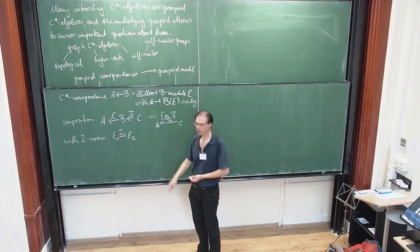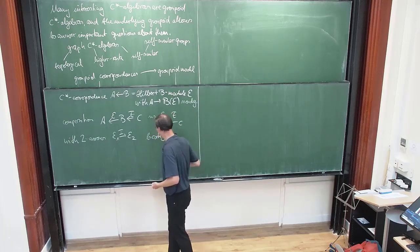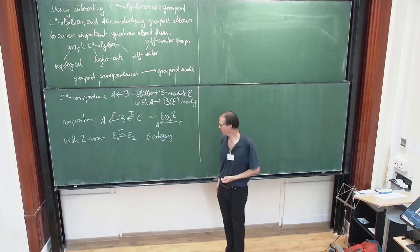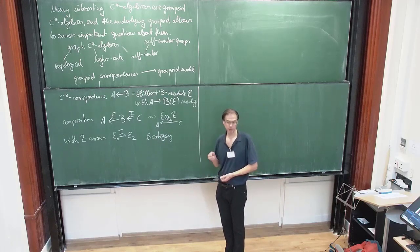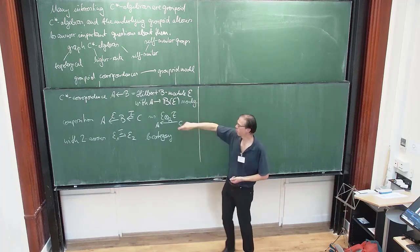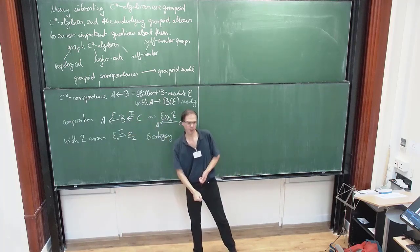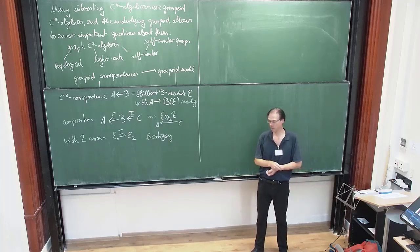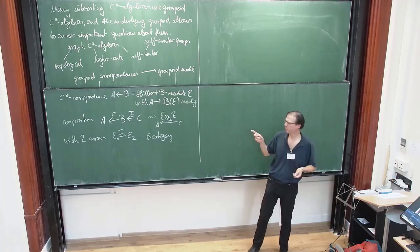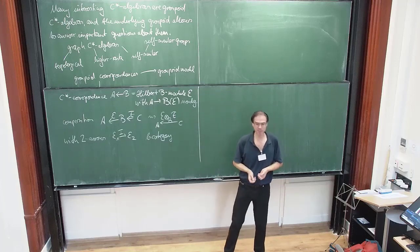All this stuff together forms what is called a bi-category. Another example of a bi-category would be categories, functors, and natural transformations — you have the same levels of structure. Or if you like homotopy theory, there are spaces, continuous maps, and then homotopy classes of homotopies. One important difference between categories and this setting: if you compose functors it's just associative, but here with this tensor product it is associative only up to very canonical isomorphisms. So if you tensor three correspondences, the result isn't quite associative, but there is an obvious way to identify the different orderings.